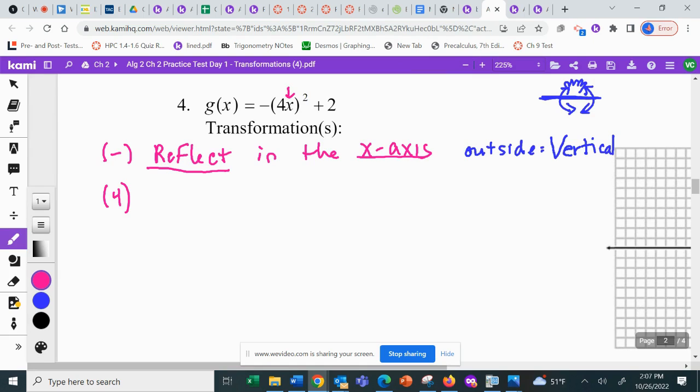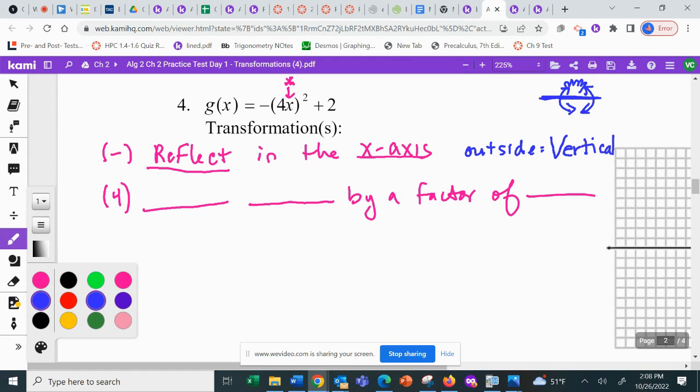The second thing we come to is a four. That four is being multiplied. So if it's being multiplied, you're going to have blank blank by a factor of blank. Is that on the inside or the outside? Inside. So if it's inside, we know it's horizontal. And it's either going to be a stretch or a shrink by a factor of.